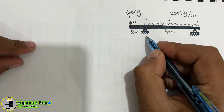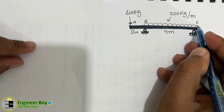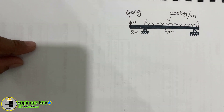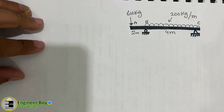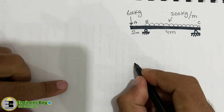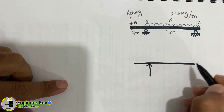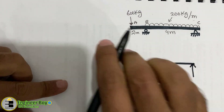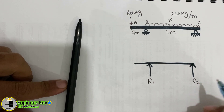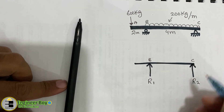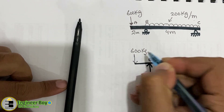We are asked to determine reaction B and reaction C. Before starting the calculation, I'll simplify the diagram. We have reaction R1 at point B and reaction R2 at point C. At point A we have a point load of 600 kg.